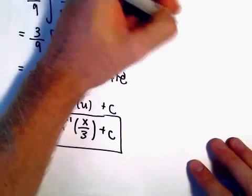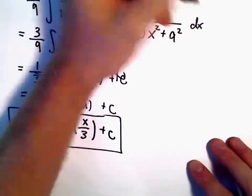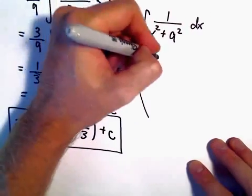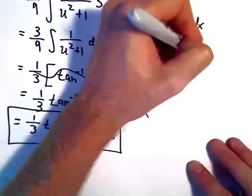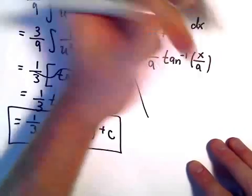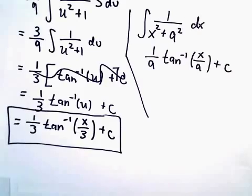So kind of a nice little useful formula to certainly know. If you have 1 over x squared plus some number squared, kind of a shortcut for this is actually we get 1 over a arctangent of x over a plus c. So this is actually going to be a nice little shortcut to remember.